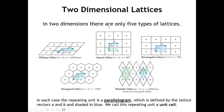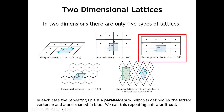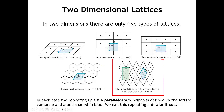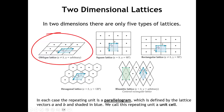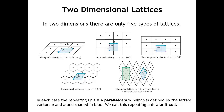In two dimensions, let's think about how many different shapes we could use to tile all of space — like the tiles you might see on a floor. You can have squares, rectangles, hexagons, rhombuses, or parallelograms. These five shapes are the only shapes that, when repeated over and over without rotation or other transformations, will tile space completely. And each one gives rise to a distinct kind of lattice.